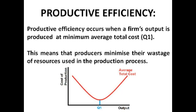Productive efficiency occurs when the firm's output is produced at minimum average total costs, as shown on the diagram. We'll come to that diagram later and talk about economies of scale. For now, all you need to know is that productive efficiency is at Q1, which means producers are minimising their wastage of resources used in the production process — producing at the lowest possible average cost per unit.